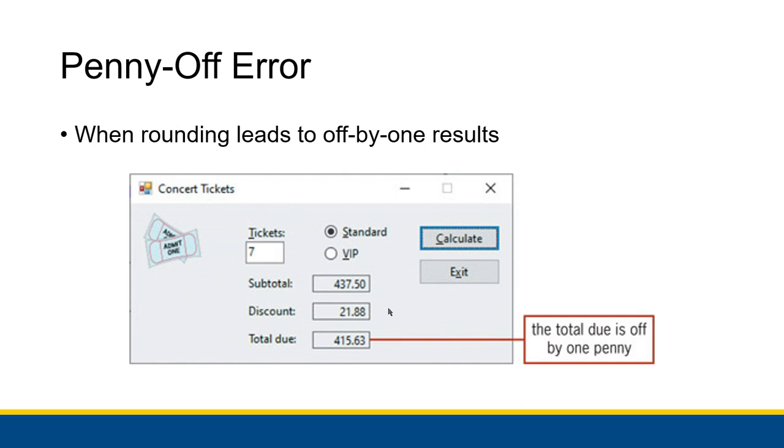I'm not going to do the full subtraction out of it. You can check it yourself if you don't believe me, but what I do know is that 10 minus 8 is 2, so the last digit of the total due should be 2 and not 3. So something has gone wrong with the rounding in this case.